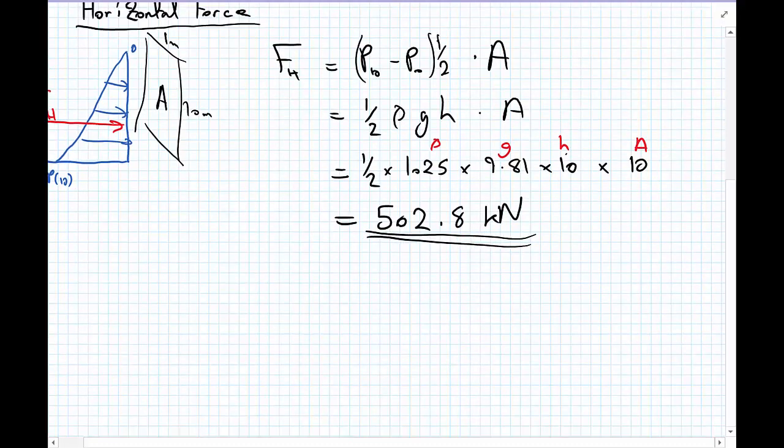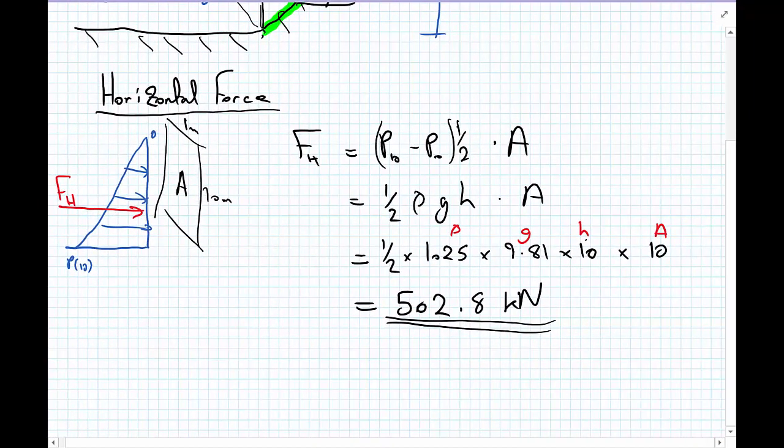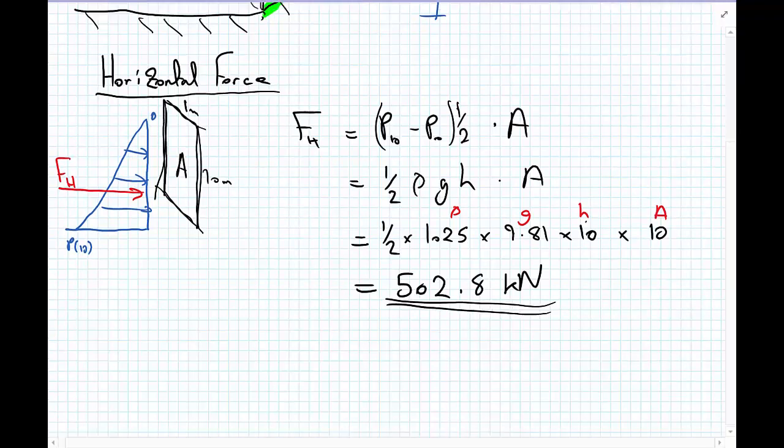And that gets us for the equivalent horizontal force 502.8 kilonewtons. And the important thing we did there was, as well as doing the hydrostatic pressure calculations, recognizing that we're only acting on this equivalent vertical area. So now we're going to proceed onto the vertical force.